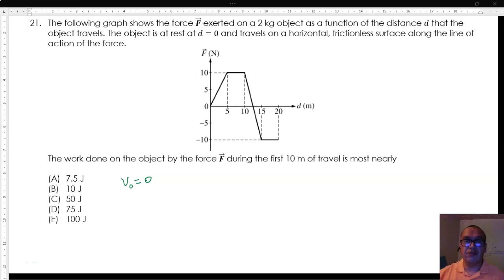The following graph shows the force exerted on a 2 kg object as a function of the distance d that the object travels. The object is at rest at d equals zero and travels on a horizontal frictionless surface along the line of action of the force.